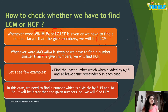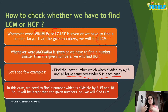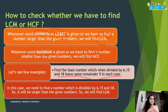Example: Find the least number which, when divided by 6, 15, and 18, leaves the same remainder 5 in each case. We need a number divisible by 6, 15, and 18. That number must be greater than all three given numbers, so we find LCM.